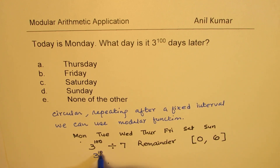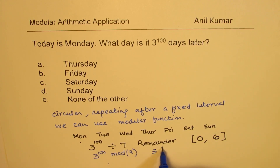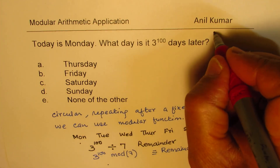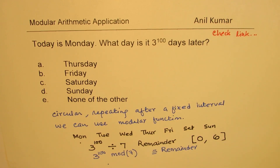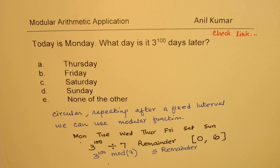So if I say three to the power of hundred mod seven, it will result in the remainder, and so we will get our answer. That's the whole idea. I'll provide you with a link — check the link for details. But in short, the idea here is that we are going to divide this number by seven and find what the remainder is. Let's see how we can do it.